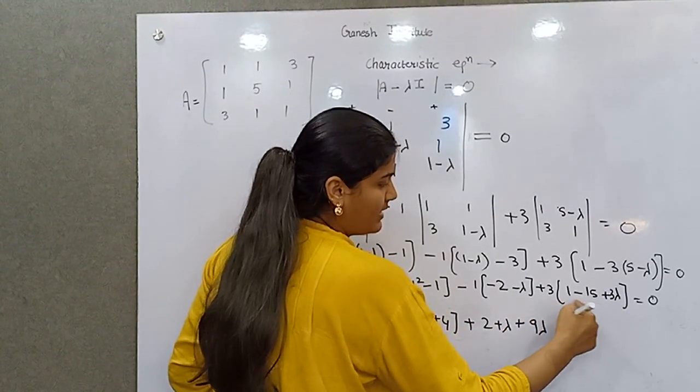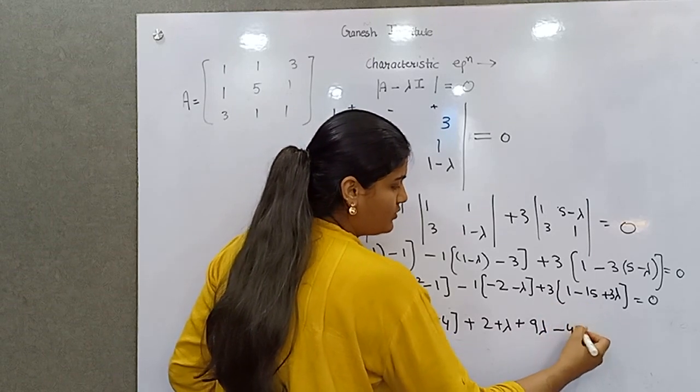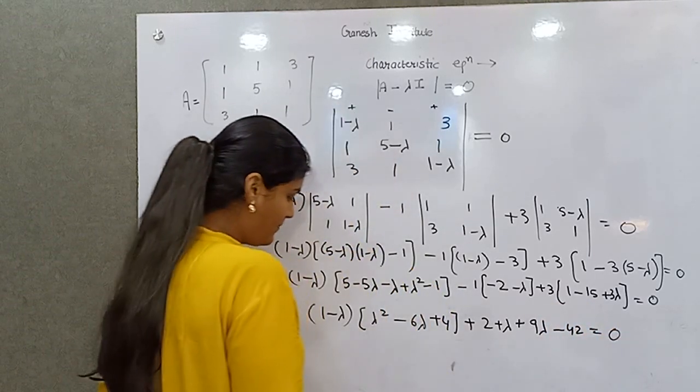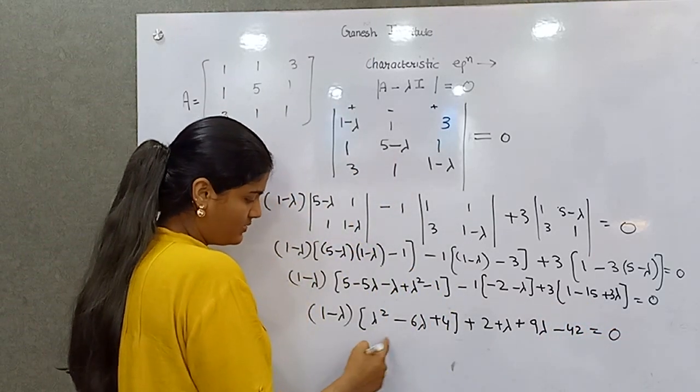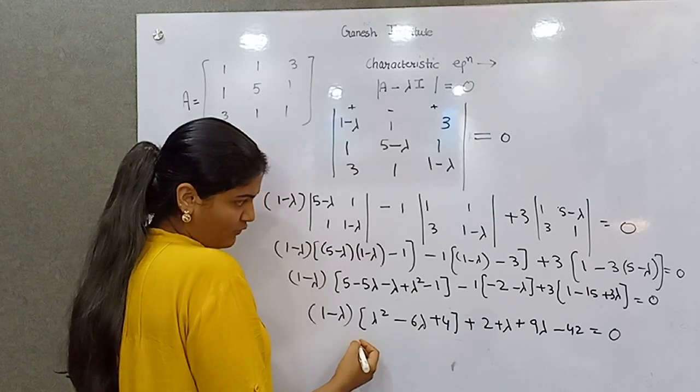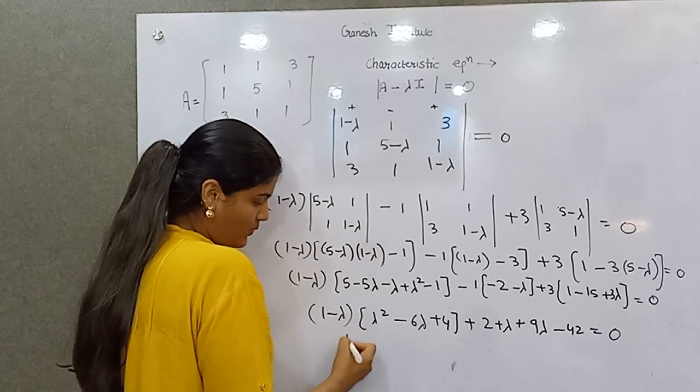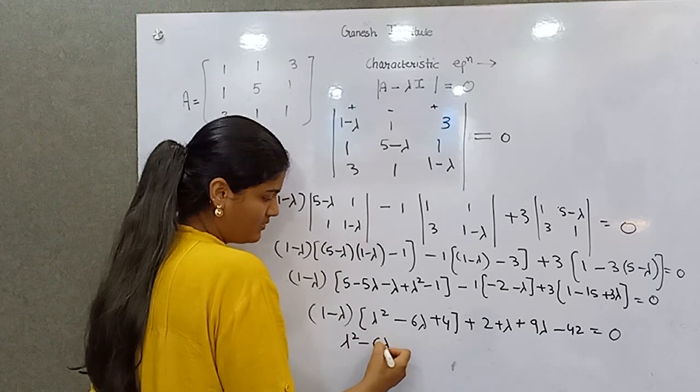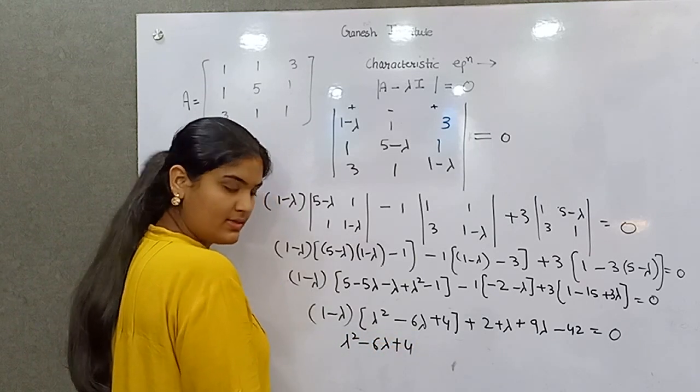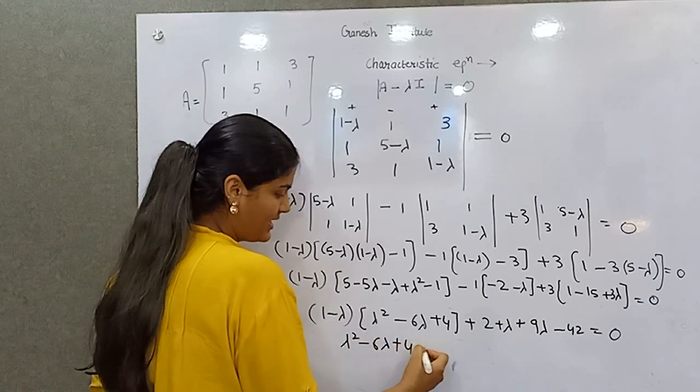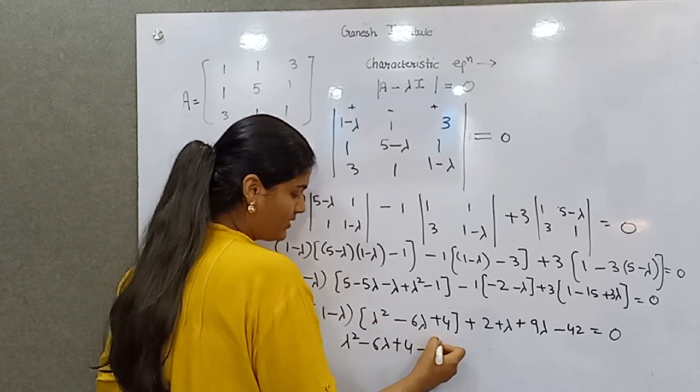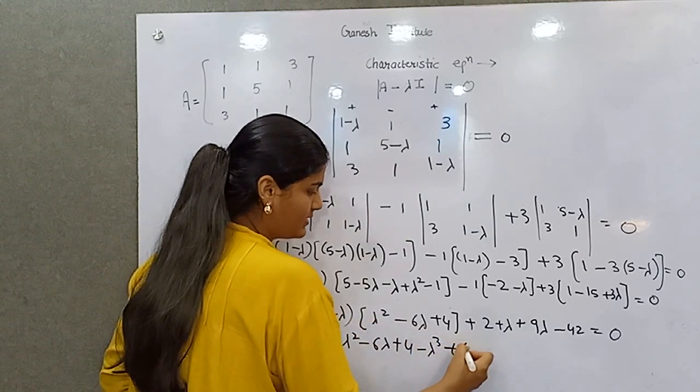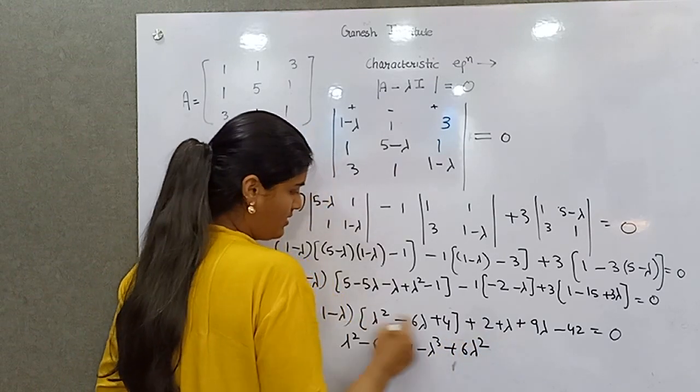Multiply these two. 1 times all of these is this. Minus lambda times... it will become lambda cubed plus 6 lambda squared minus 4 lambda.